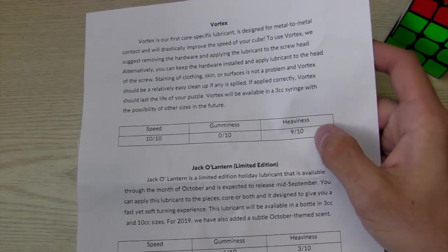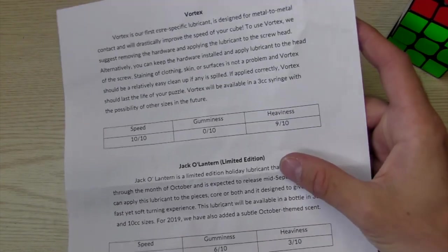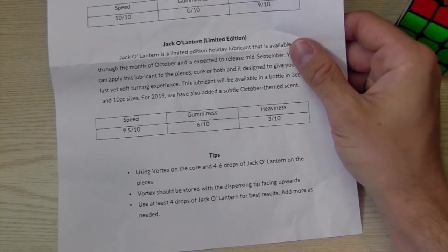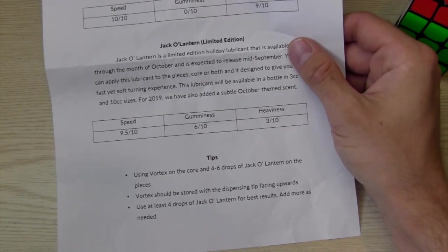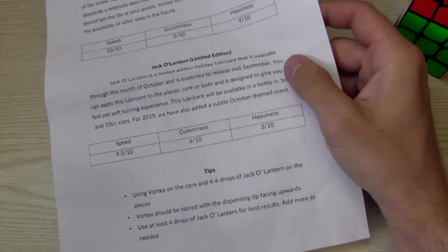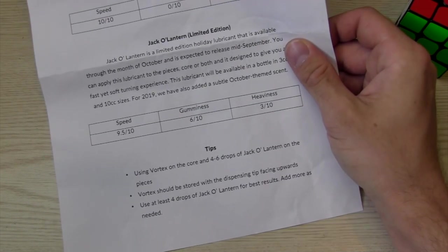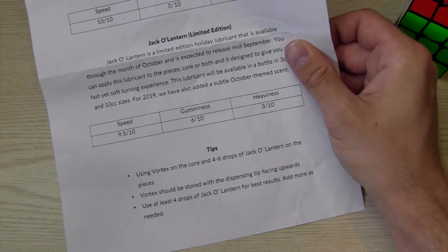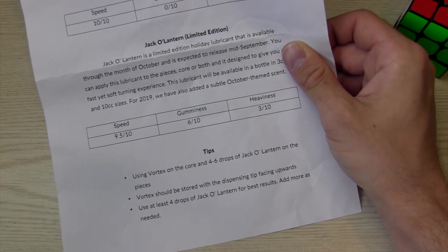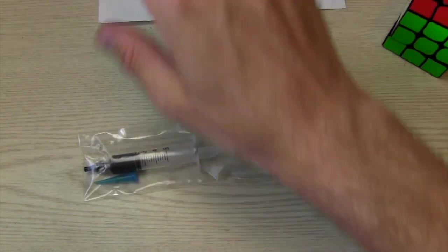So, it says speed is 10 out of 10, 0 for gumminess, 9 out of 10 for heaviness. Using Vortex on the core, 4 to 6 drops. Oh, that's jack-o-lantern. Oh, that's with it. I missed that. Vortex should be stored with the dispensing tip facing upper. Use at least 4 drops, jack-o-lantern. Okay, I read that part.